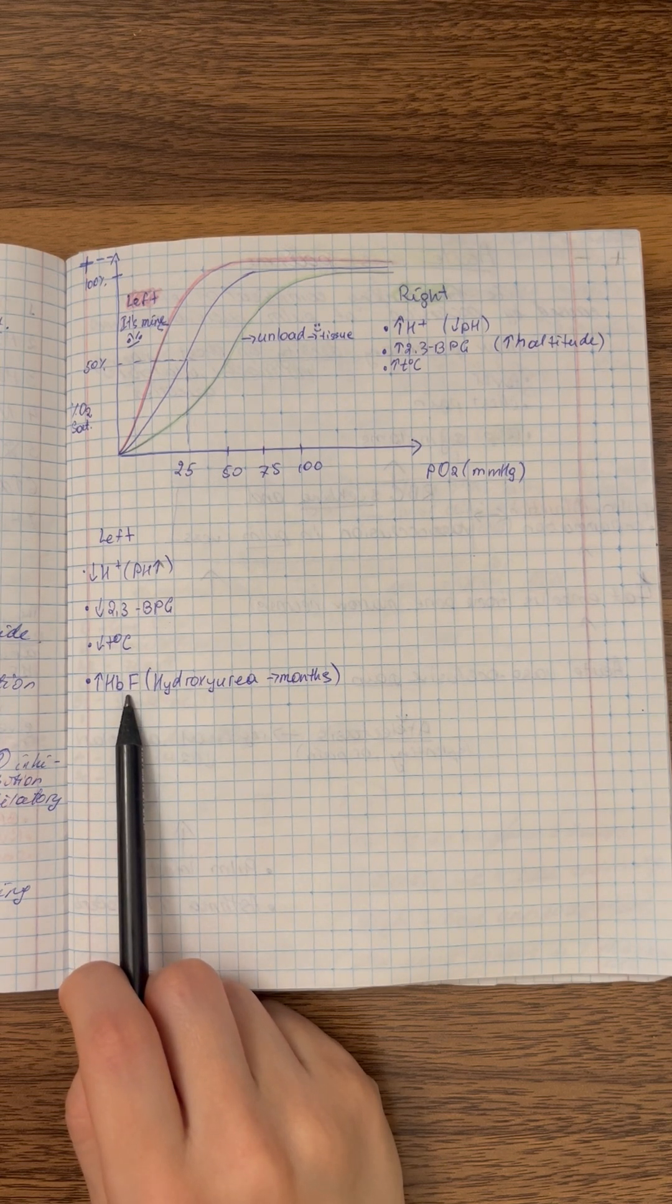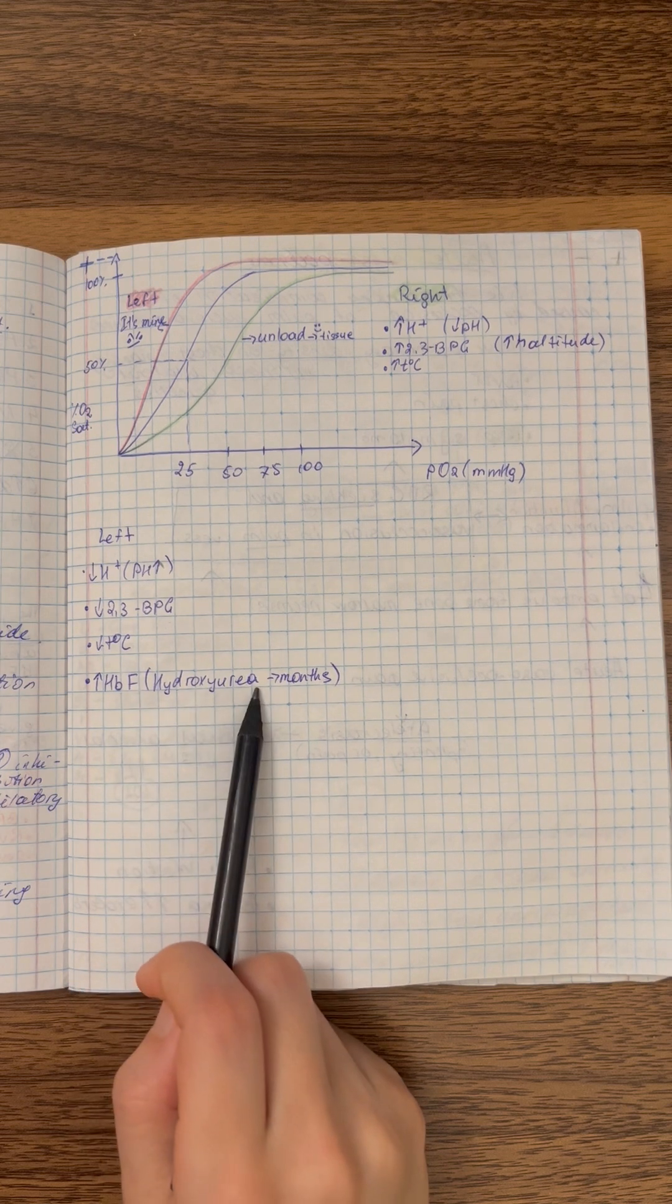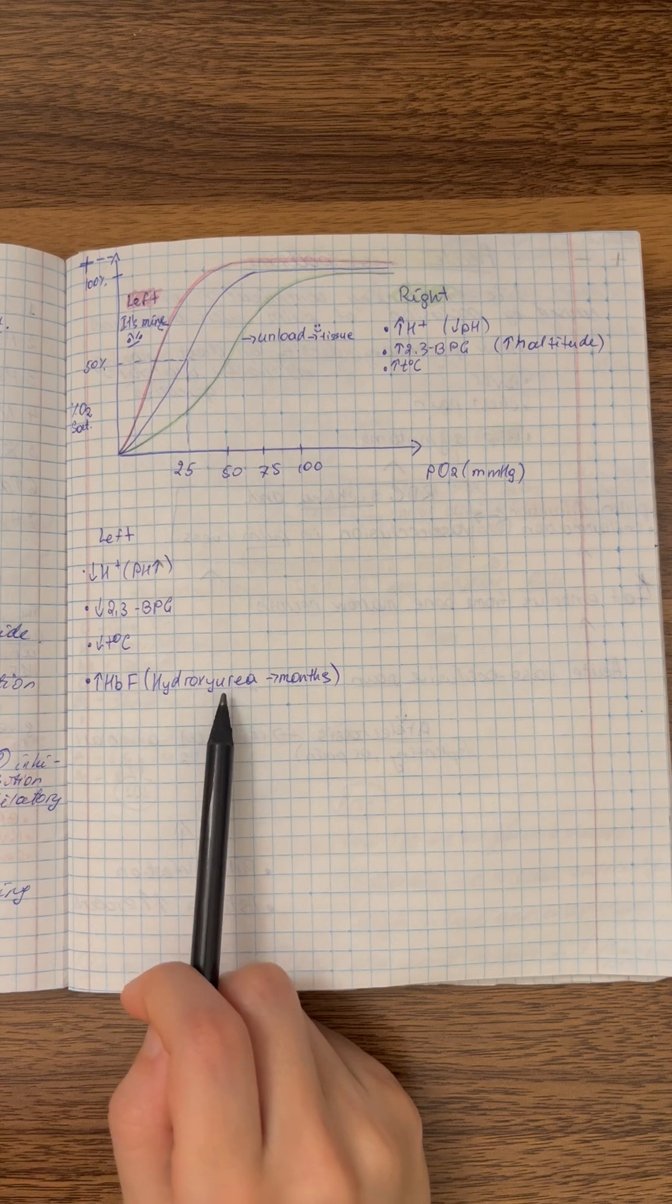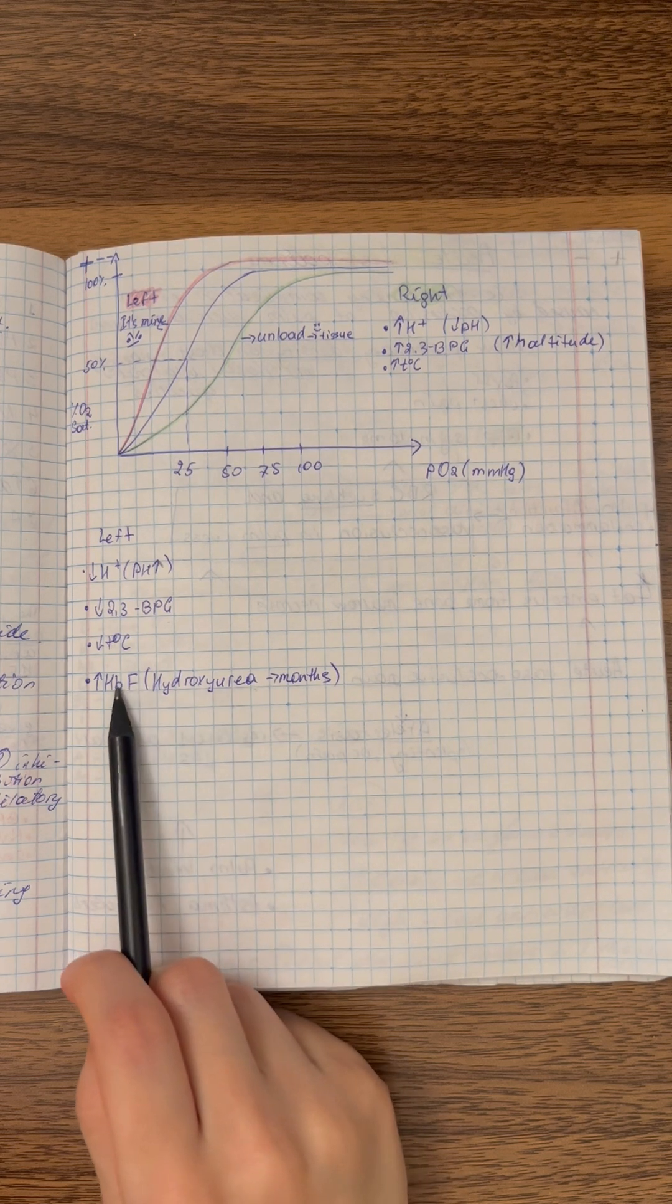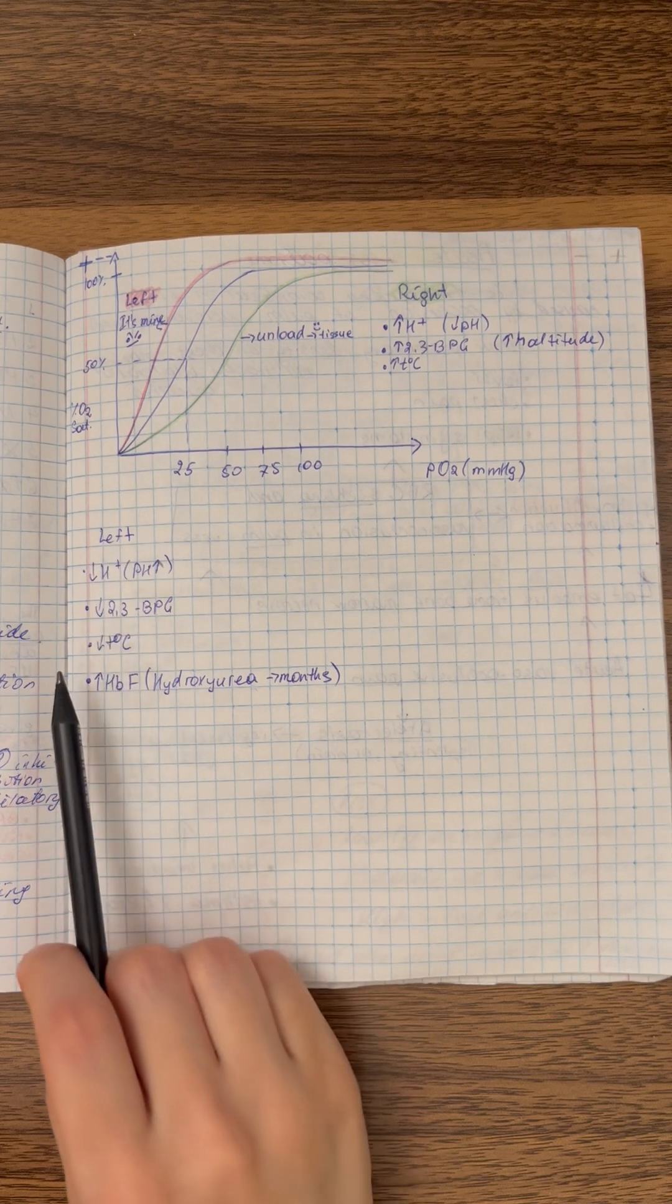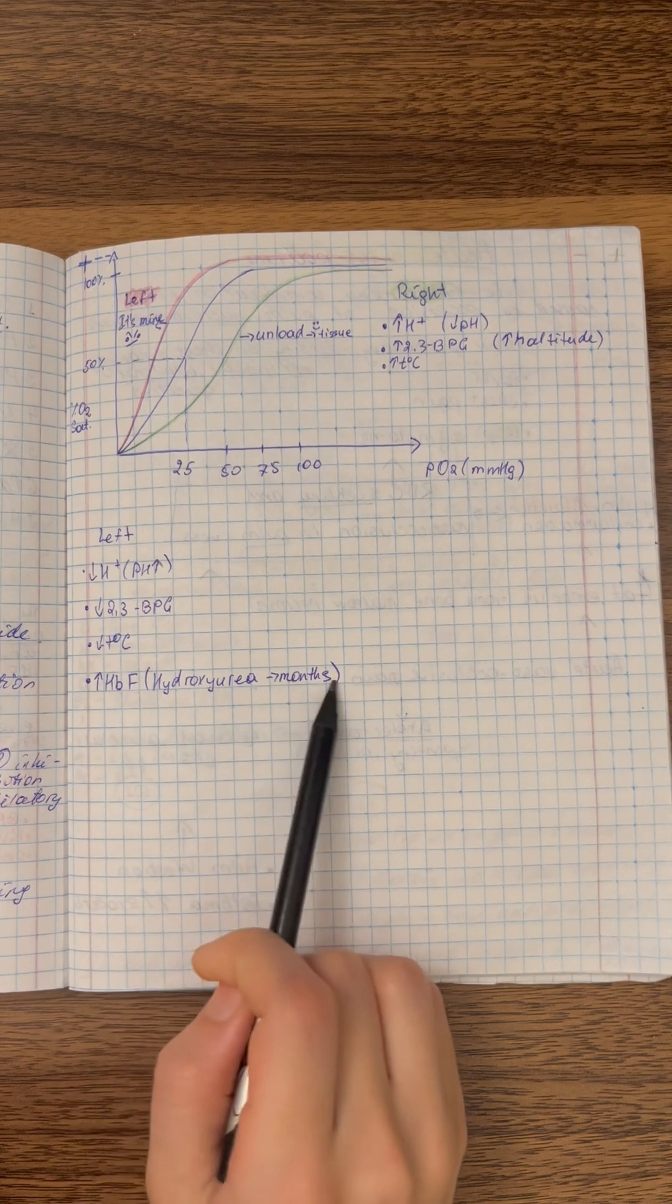The medication hydroxyurea increases erythrocyte hemoglobin F levels, which increases overall hemoglobin affinity for oxygen and shifts the hemoglobin dissociation curve to the left. One thing that is important to know here is that months are required for hydroxyurea to do this.